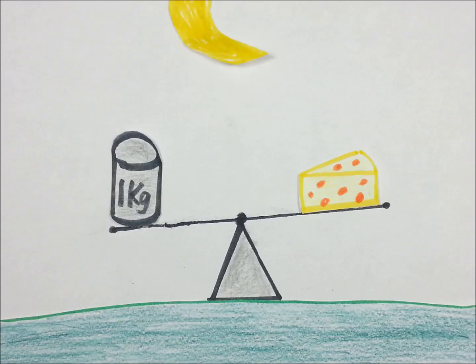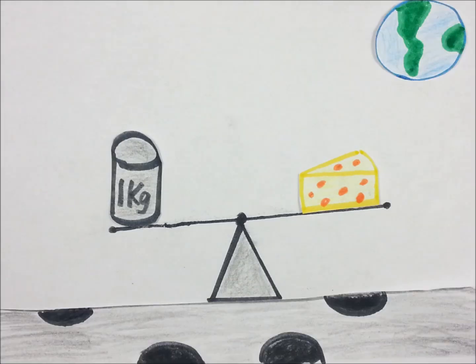Note that the cheese and the cylinder would balance each other regardless if they were on Earth, the Moon, or Mars.